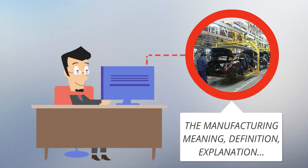Manufacturing engineering or manufacturing process are the steps through which raw materials are transformed into a final product. The manufacturing process begins with product design and materials specification from which the product is made.